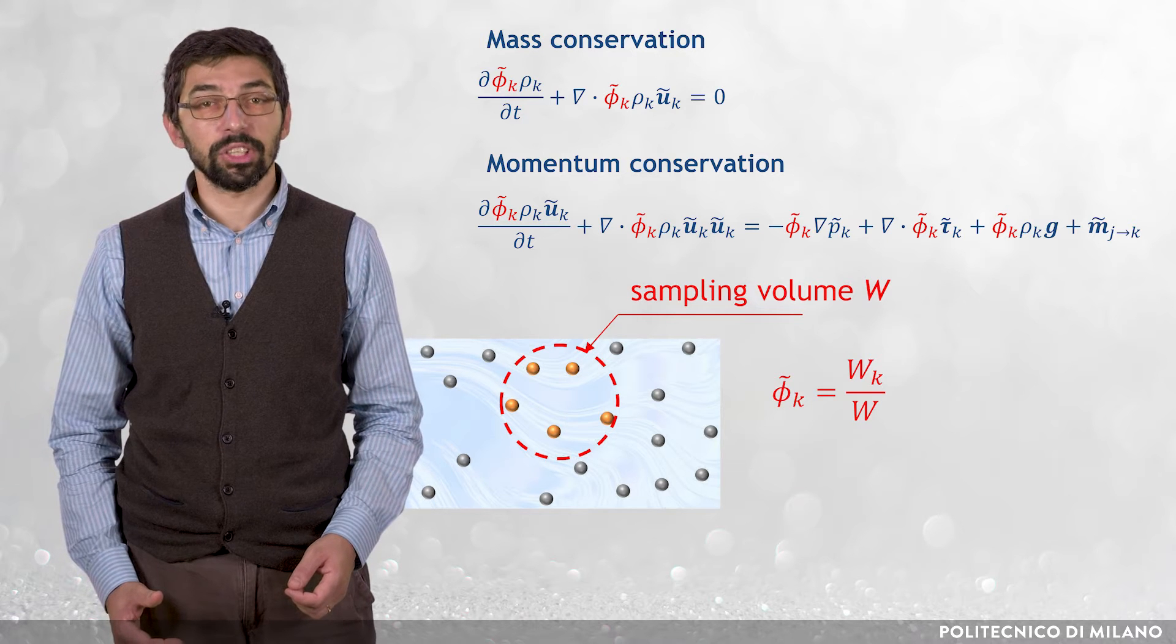However, there is a key difference, because now the sampling is carried out at each location in the flow domain and continuously during time. Therefore, tilde phi k is no longer a single scalar value but a scalar function of time t and space r.